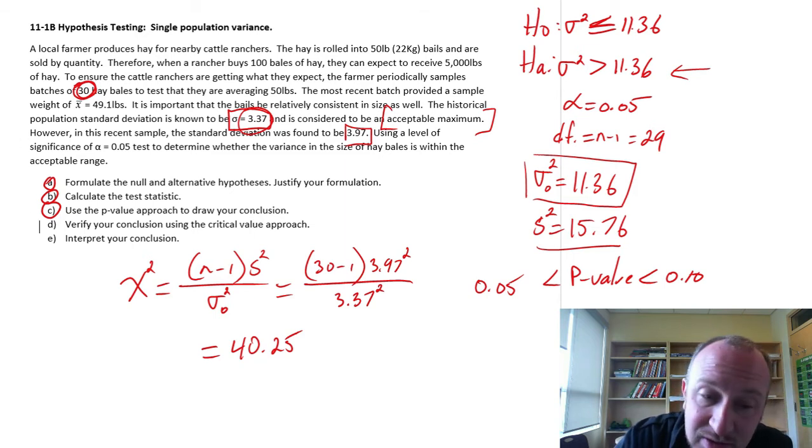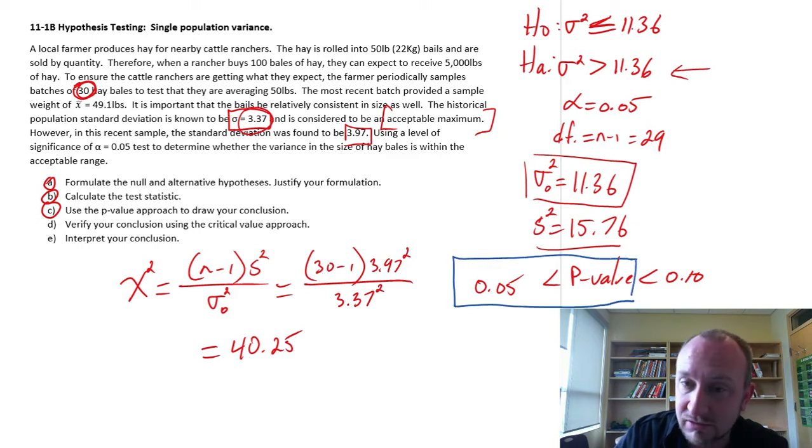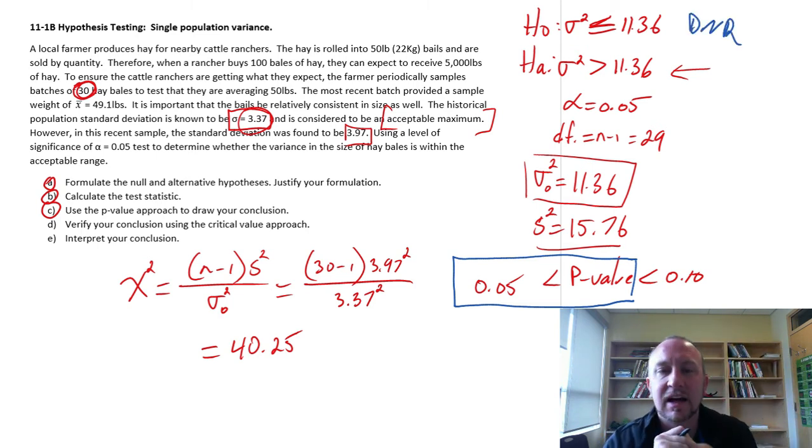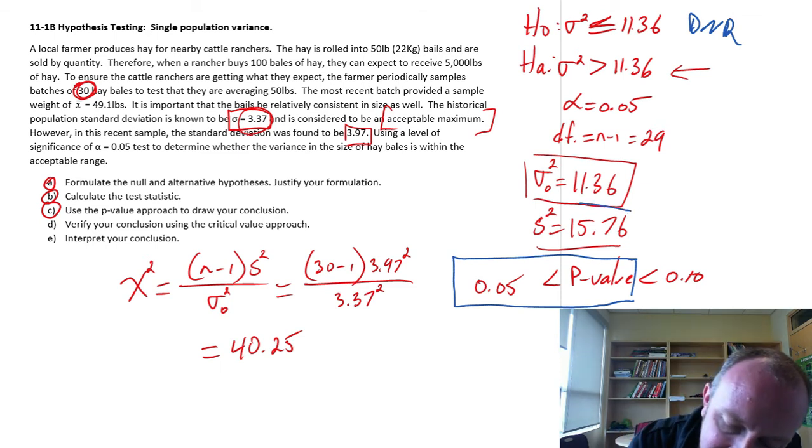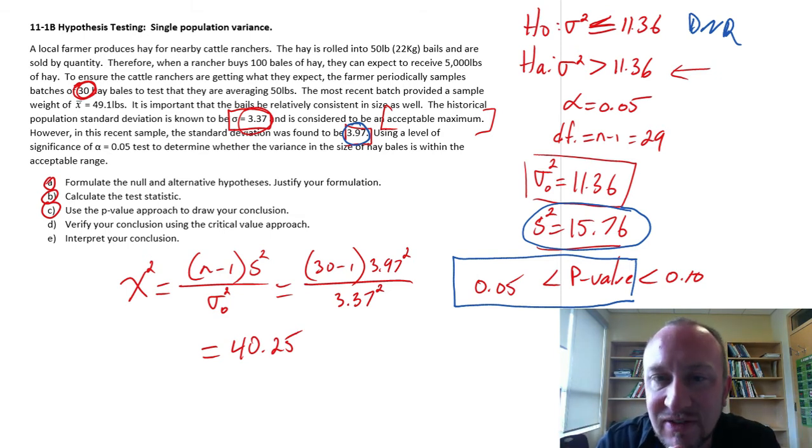If that p-value, the same rejection rule, always with the p-value. If it's less than or equal to alpha, we can reject. Here it is greater than alpha. So we do not reject this null hypothesis. A sample variance of 15.76, which corresponds to a sample standard deviation of 3.97, does not provide us with sufficient evidence to reject that null hypothesis. Meaning I am unable to say that we are exceeding our acceptable maximum variance in our bales of hay.